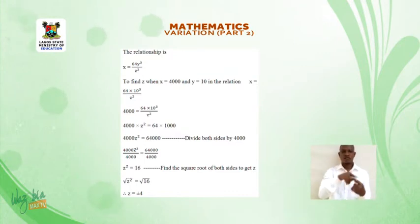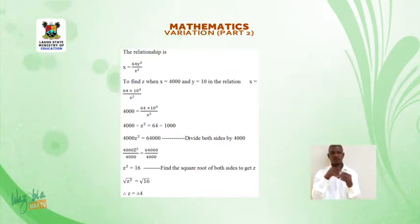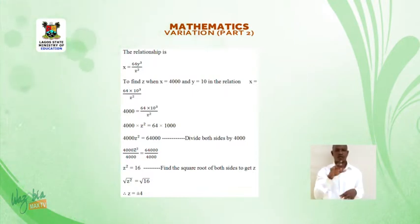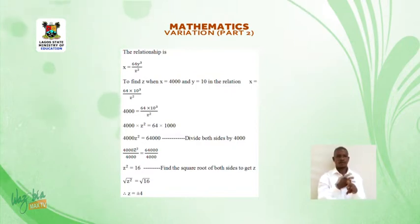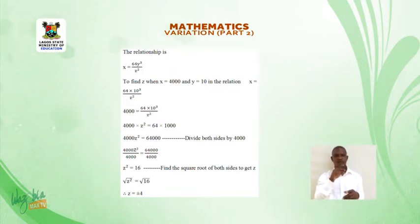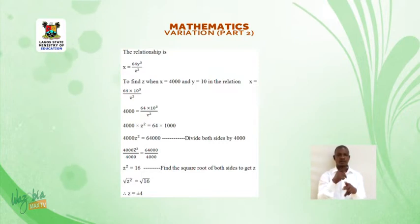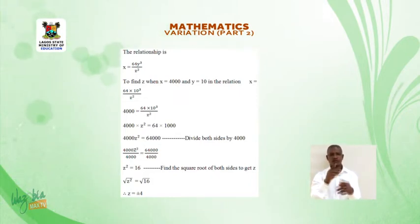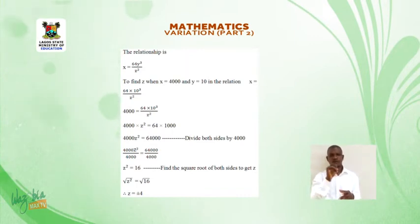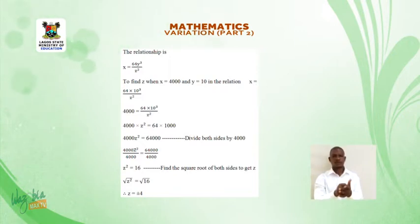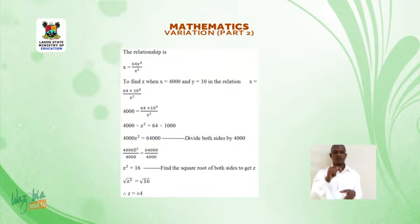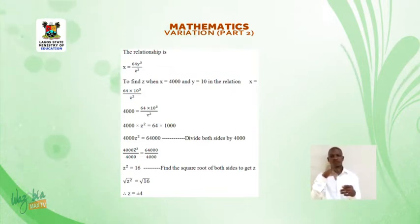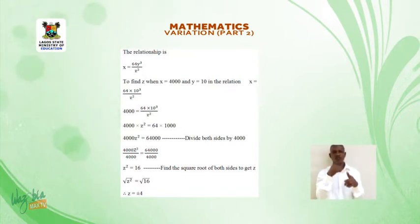To find Z when X is equal to 4000 and Y is equal to 10, substitute into the relation X is equal to 64Y cubed over Z squared. 4000 is equal to 64 times 1000 over Z squared. Therefore, 4000Z squared is equal to 64,000. Dividing both sides by 4000: Z squared is equal to 16. Taking the square root of both sides, Z is equal to plus or minus 4.